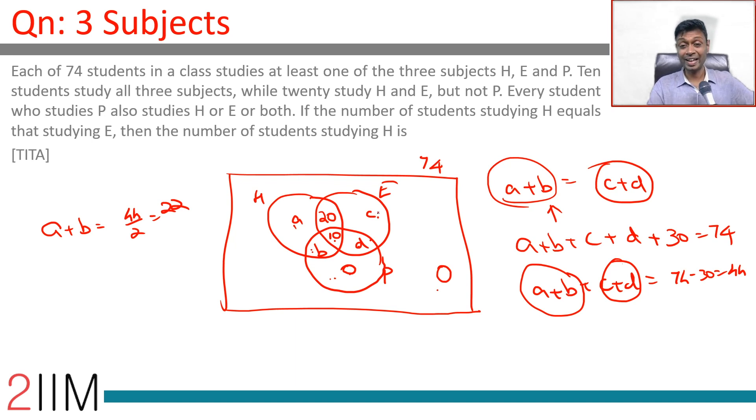The number of students studying H equals that studying E, then the number of students studying H, A plus B, is 22. So 22 plus 32 plus 20, 52. 30 here, 22 here adding up to 52.